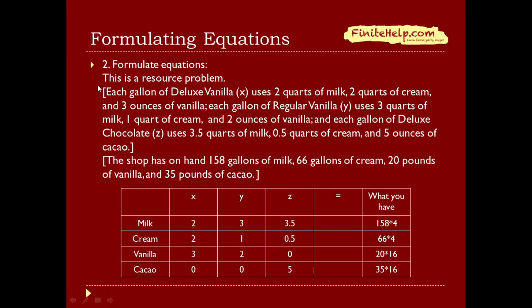Here's a quote from the problem again. Each gallon of deluxe vanilla (x) uses two quarts of milk, two quarts of cream, and three ounces of vanilla. So I fill down the x column: two for milk, two for cream, and three for vanilla. For y: three quarts of milk, one cream, two for vanilla. For deluxe chocolate (z): 3.5 milk, 2.5 cream, and 5 cocoa.